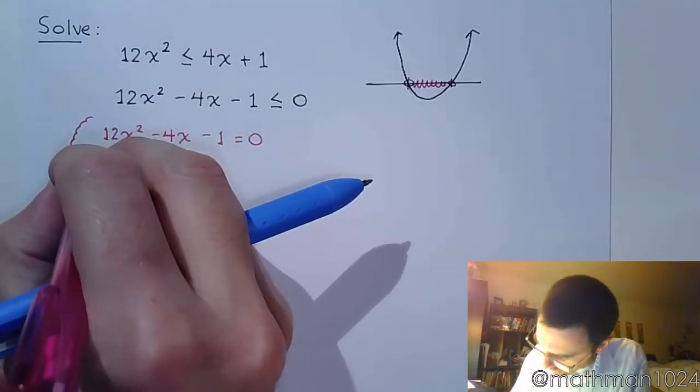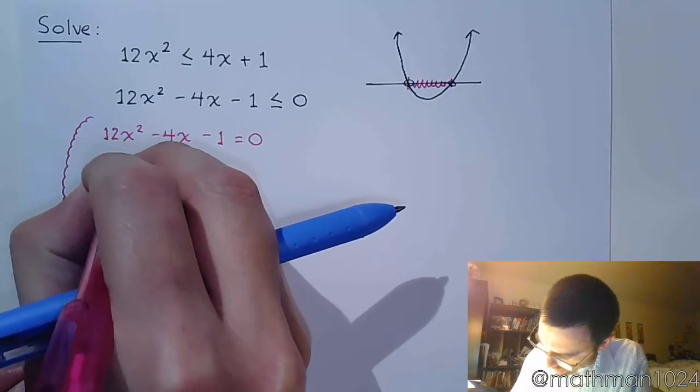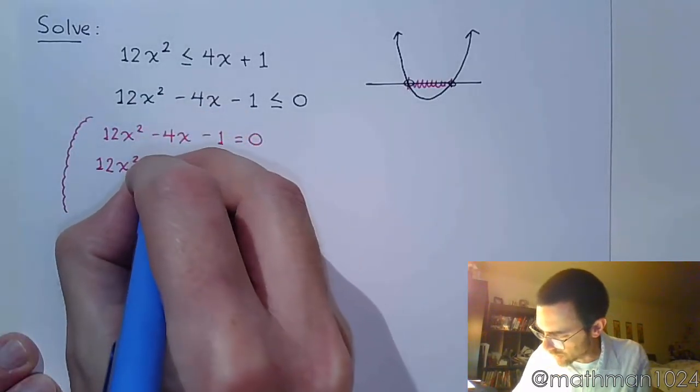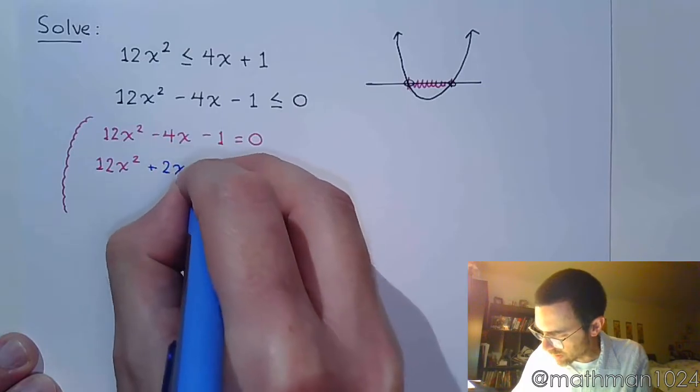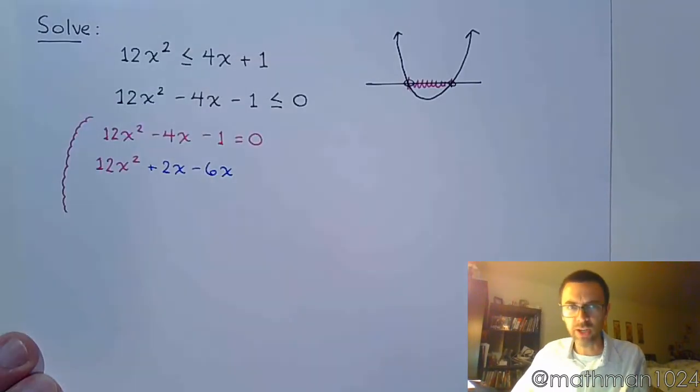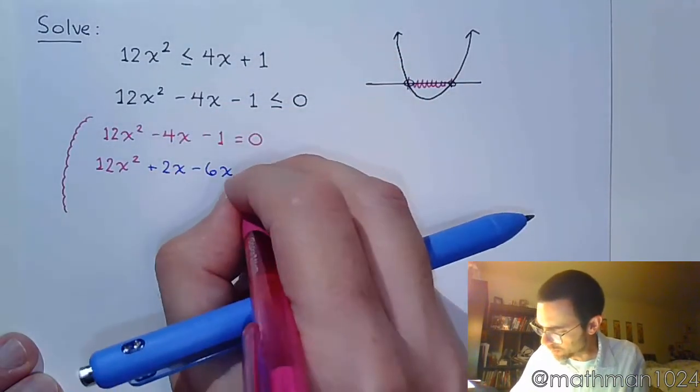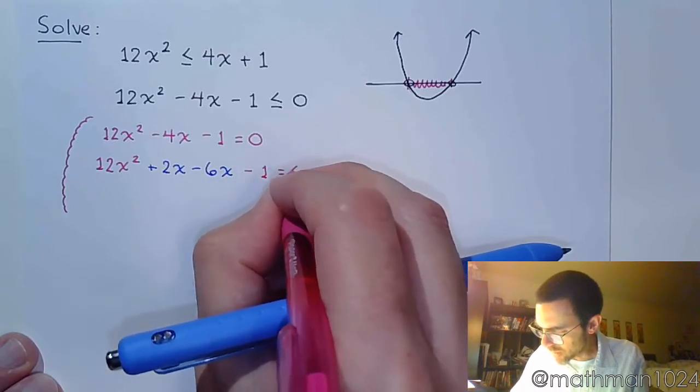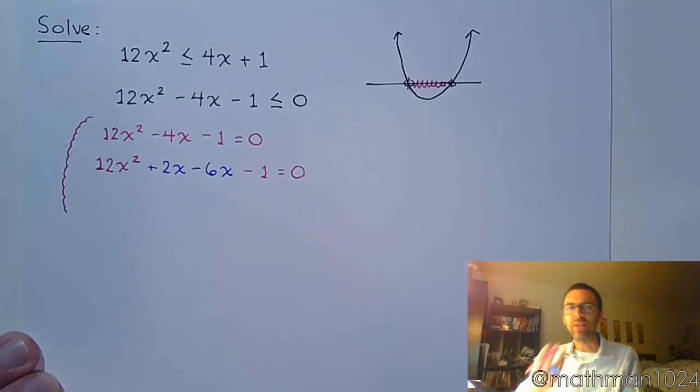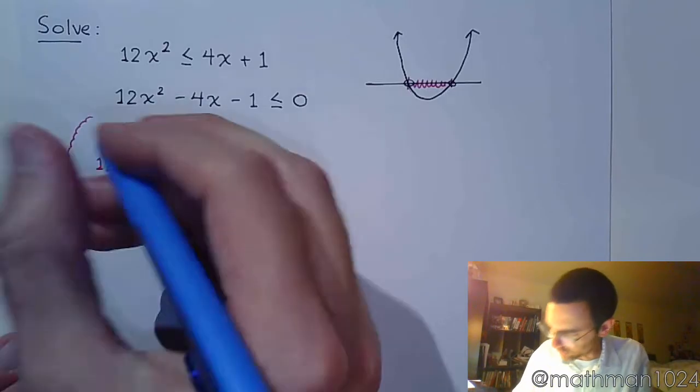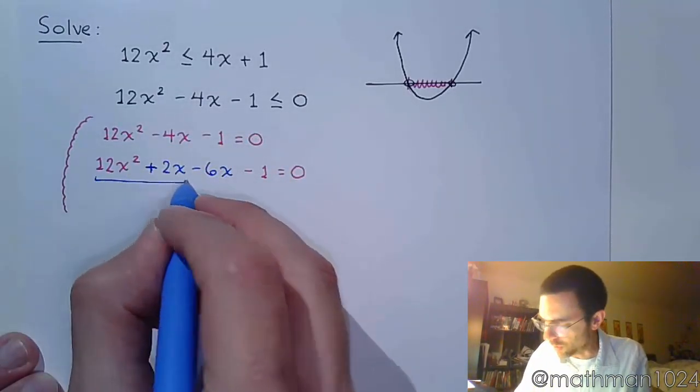So I can rewrite this to be plus 2x minus 6x. That's going to give me negative 4x so that looks pretty good. And then we can do factoring by grouping.